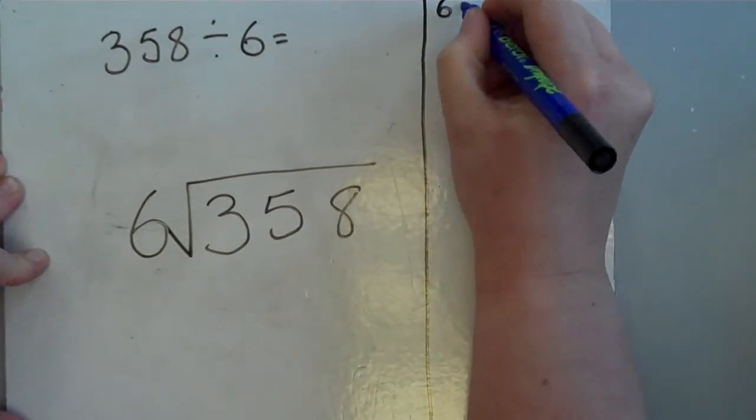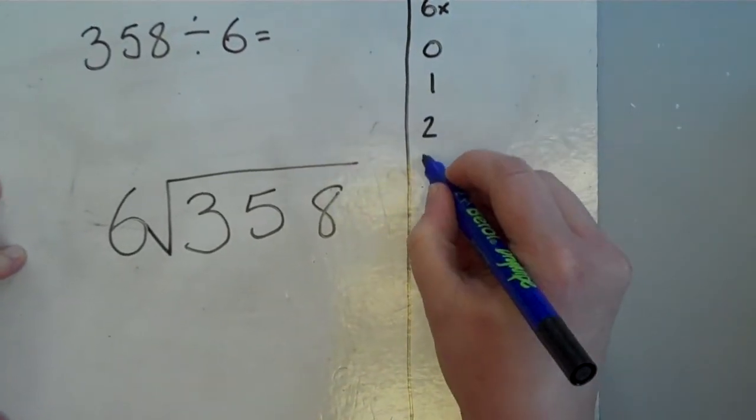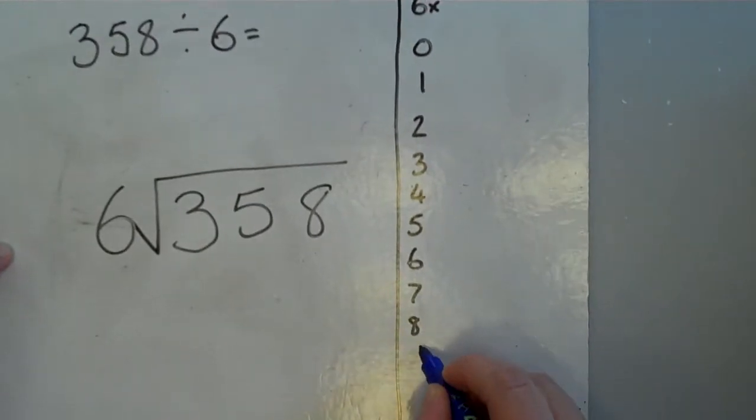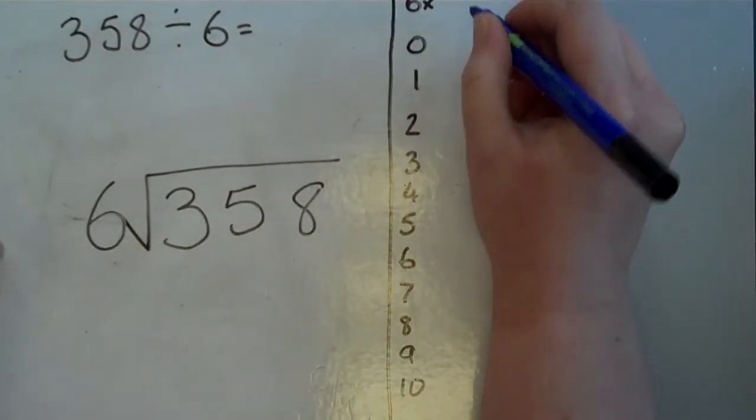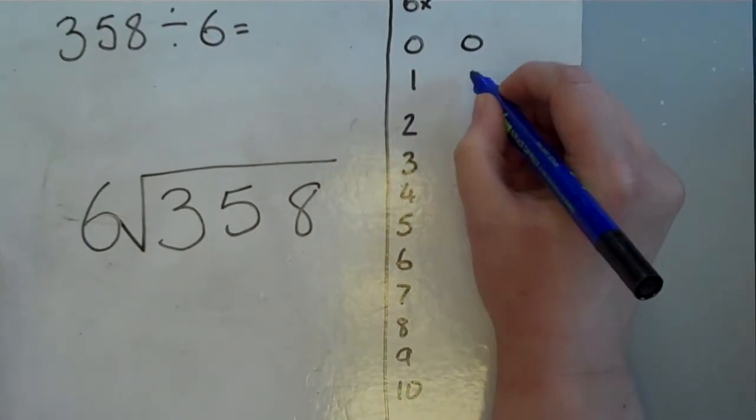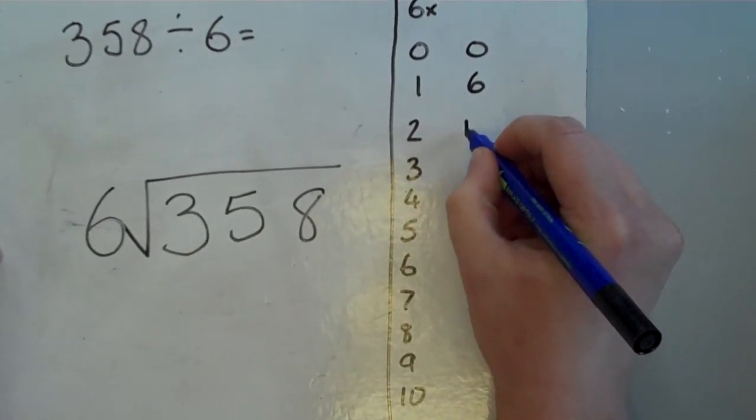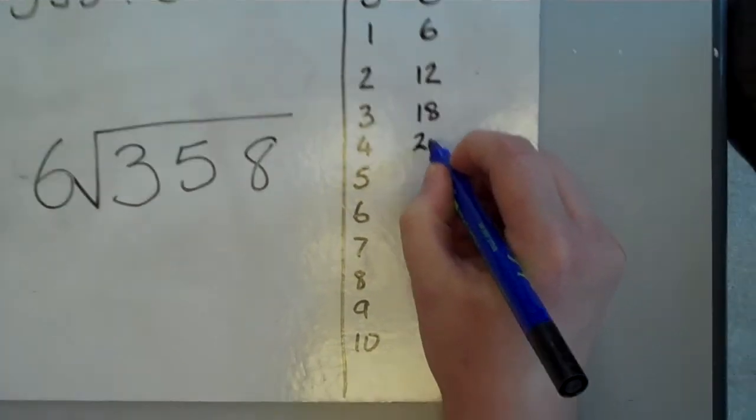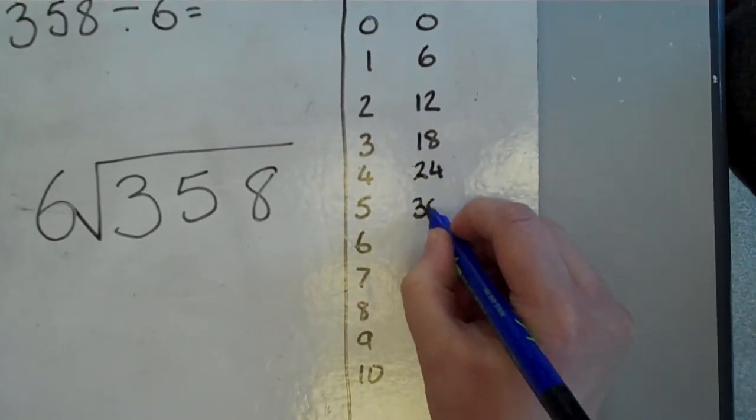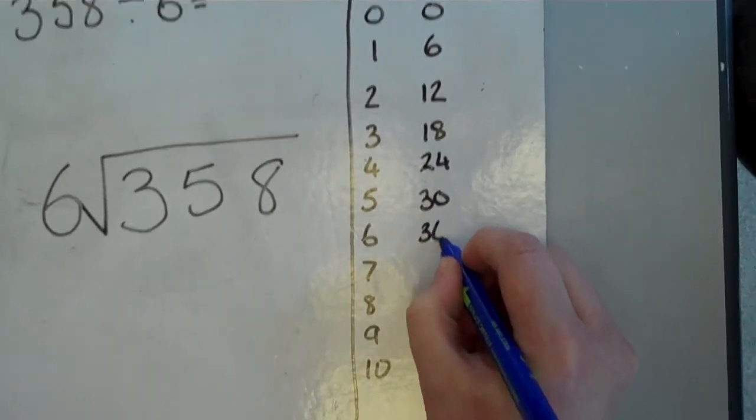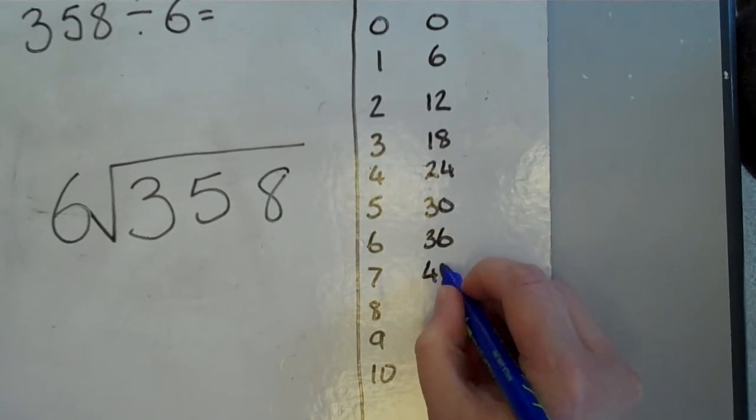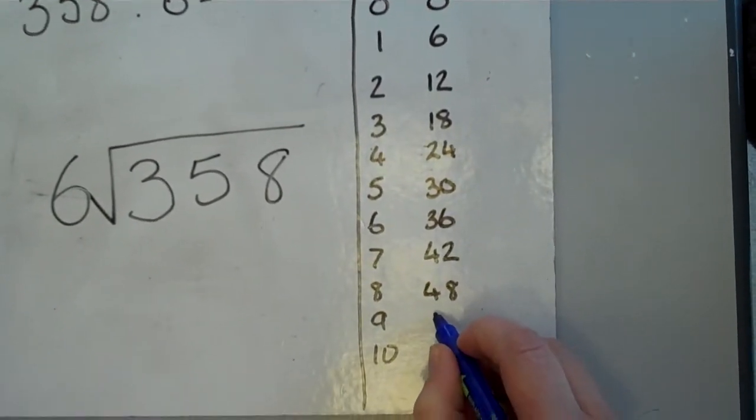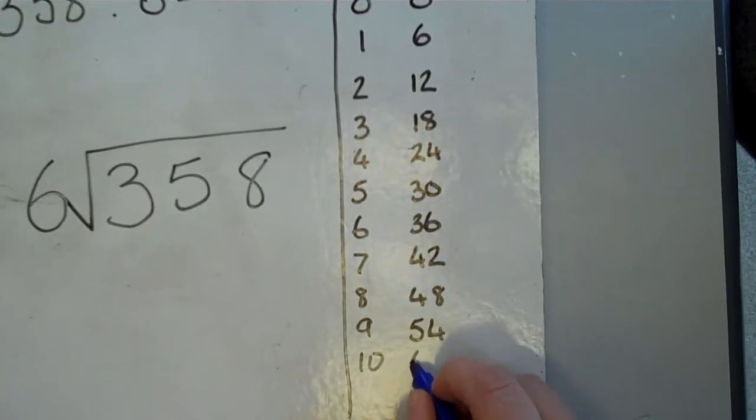So 6 times 0, 1, 2, 3, 4, 5, 6, 7, 8, 9, 10. 6 times 0 is 0, 6 times 1 is 6, 6 times 2 is 12, 6 times 3 is 18, 6 times 4 is 24, 6 times 5 is 30, 6 times 6 is 36, 6 times 7 is 42, 6 times 8 is 48, 6 times 9 is 54, and 6 times 10 is 60.